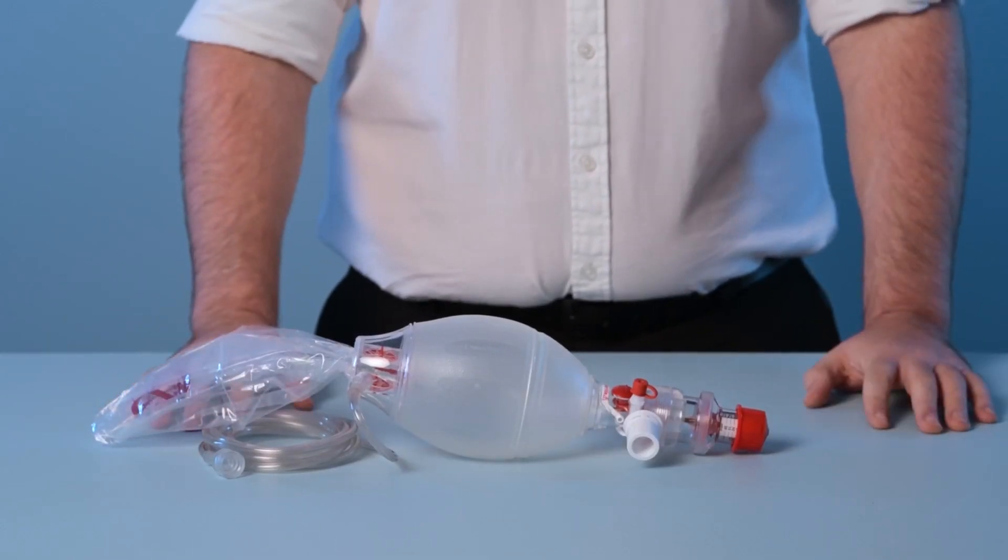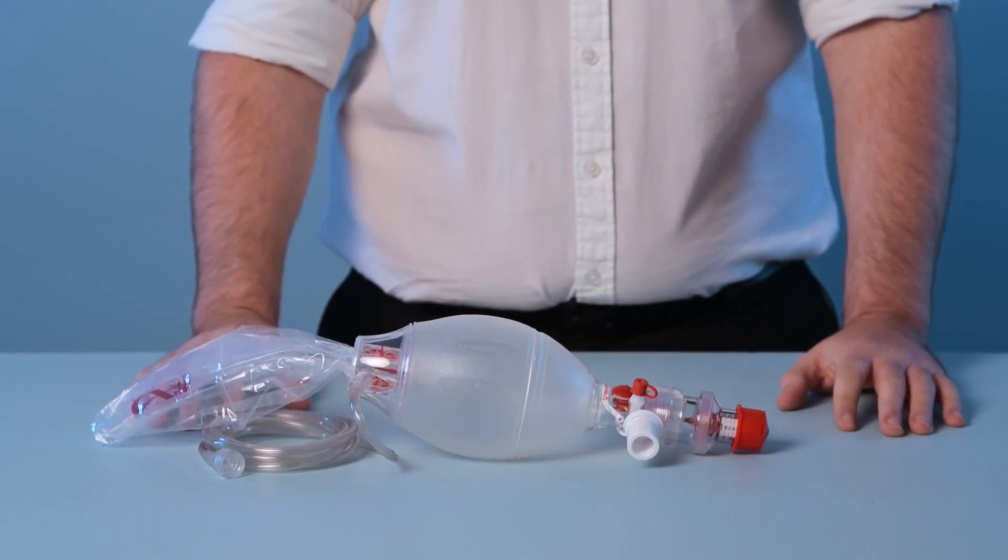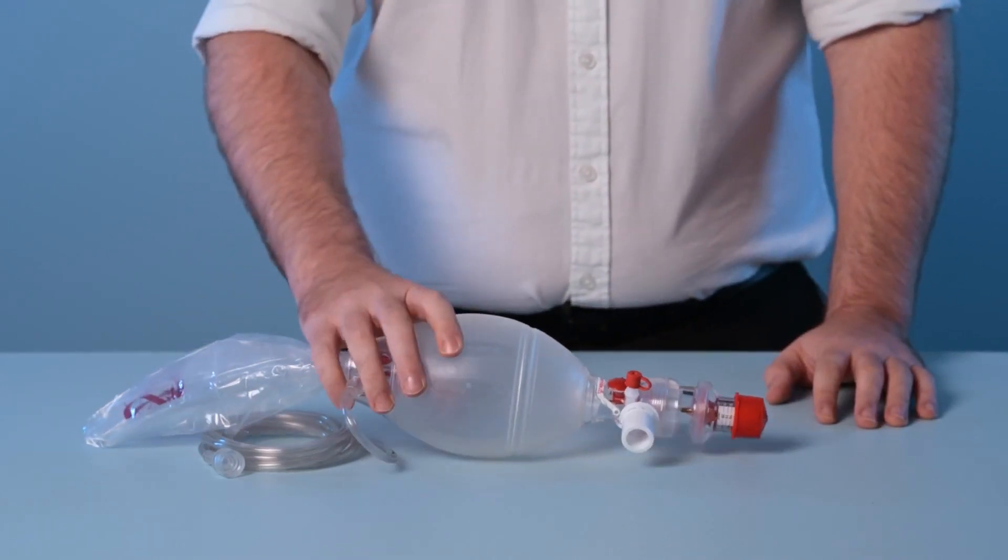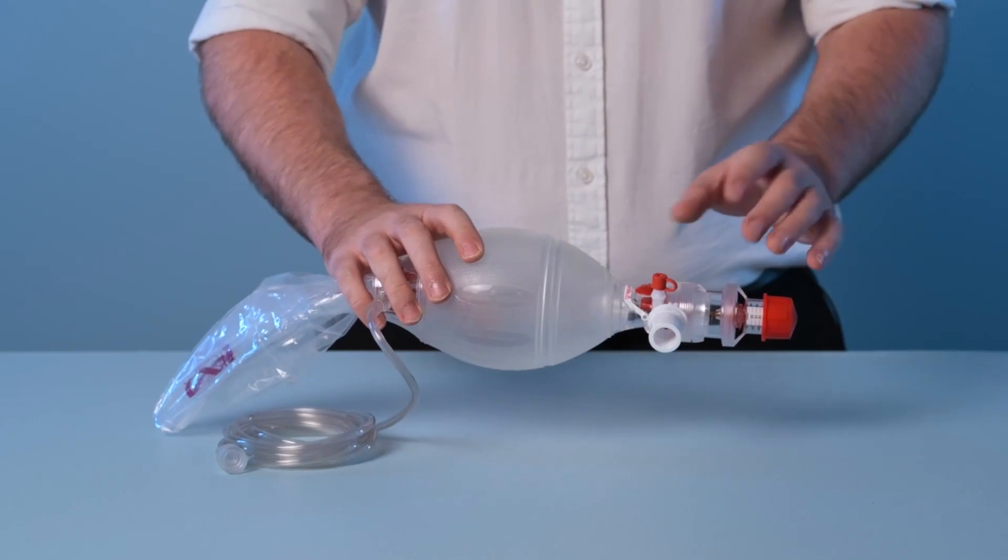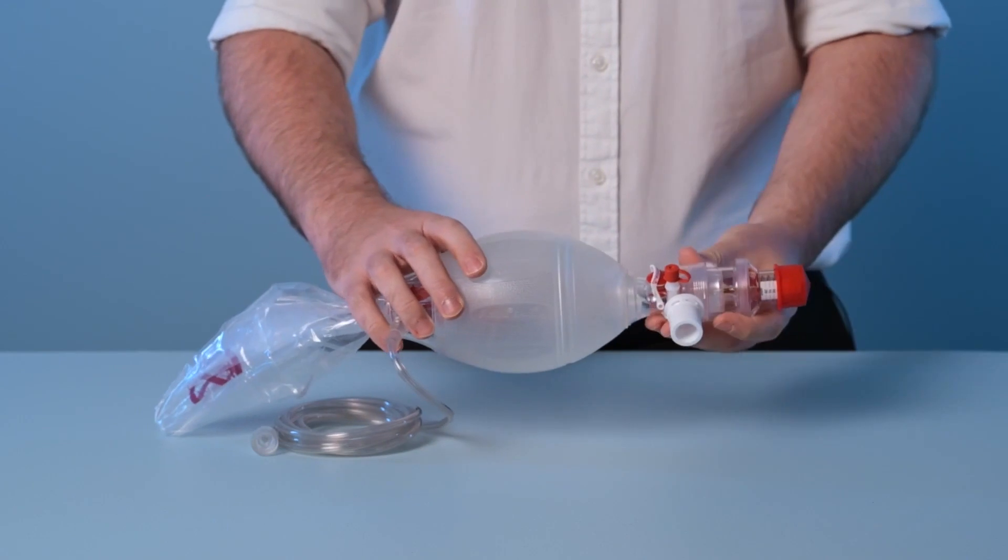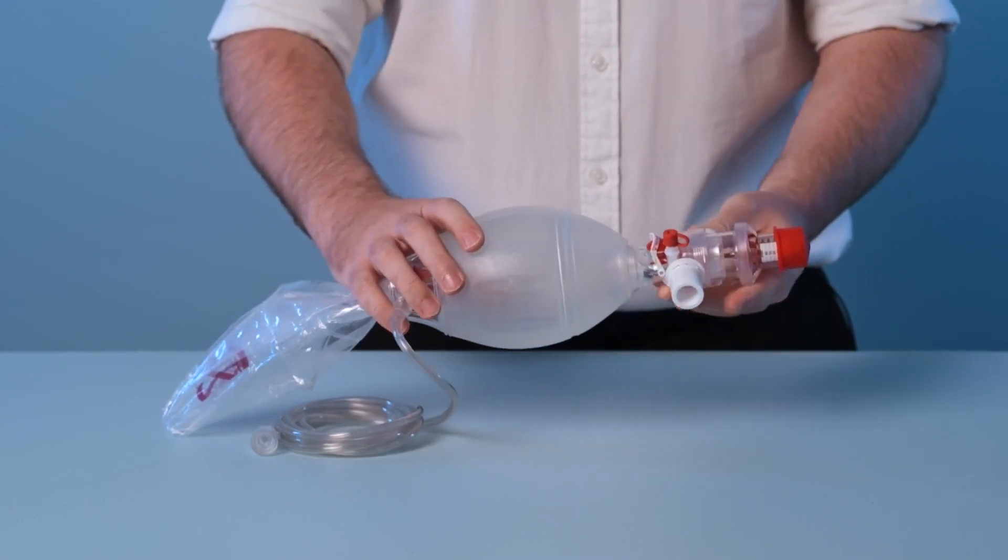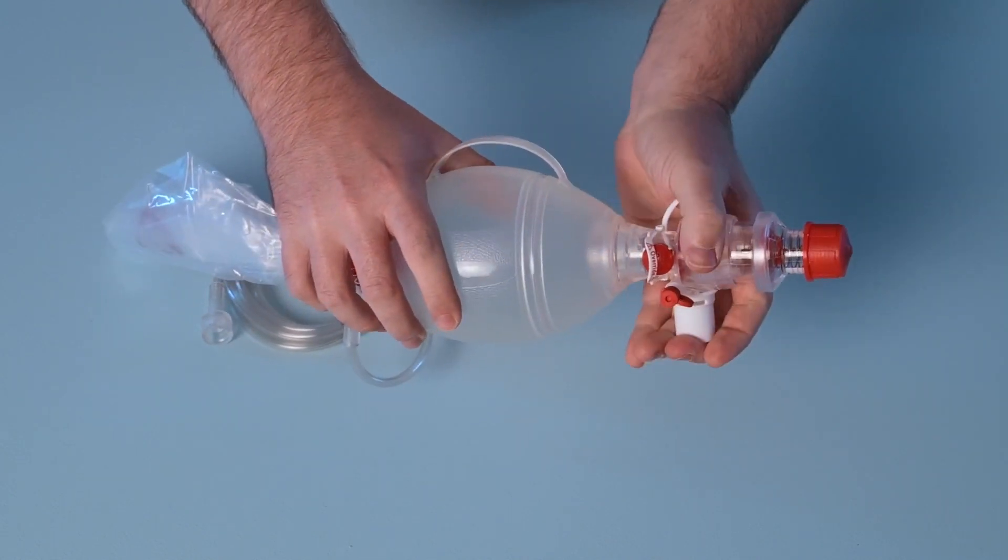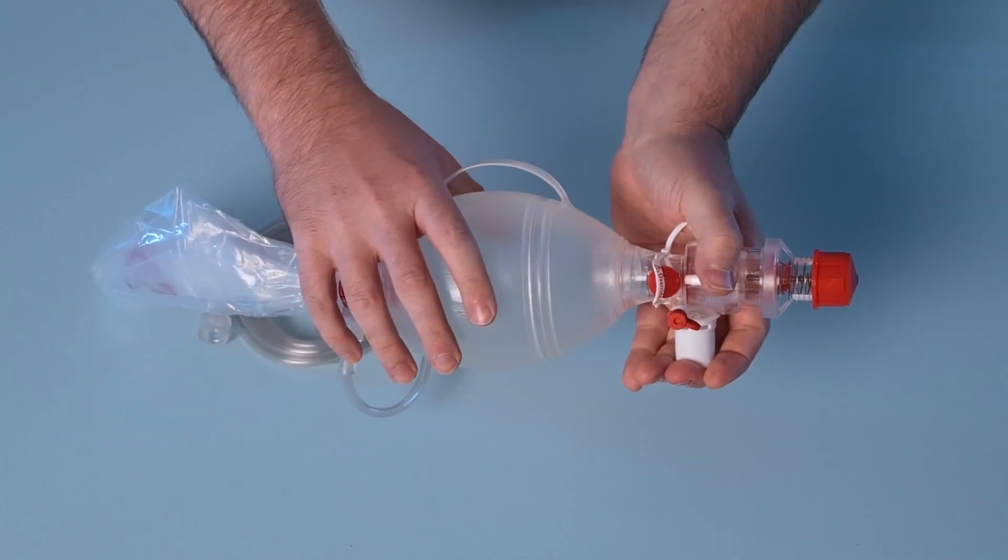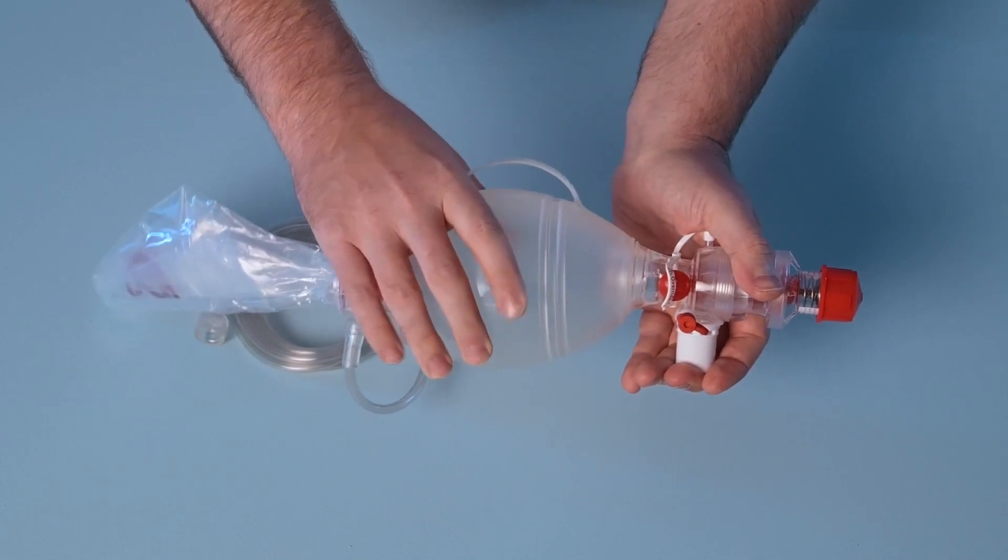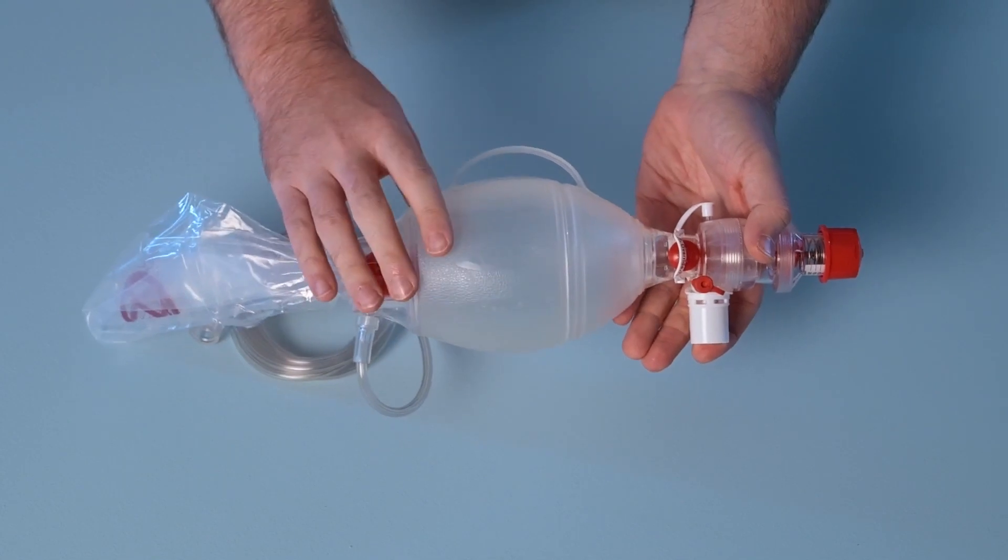Prior to assembling the product pre-use checks must be conducted to ensure correct functionality. To check the functionality of the pop-off valve engage the override cap over the pop-off valve. This prevents the valve from activating. Next block the patient connector and squeeze the compressible bag. Resistance should be felt as the bag is compressed.